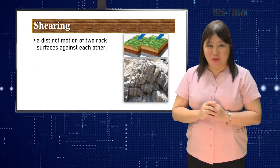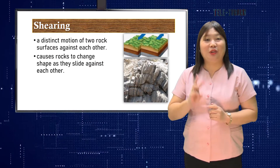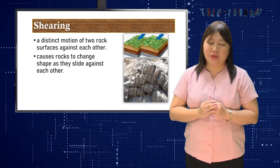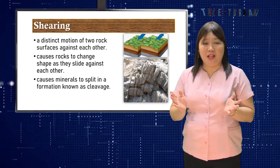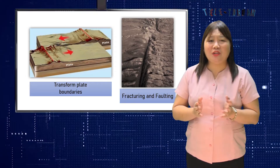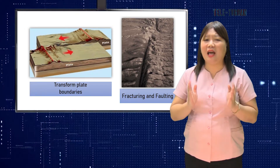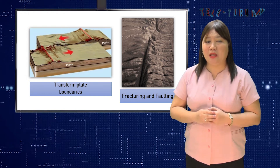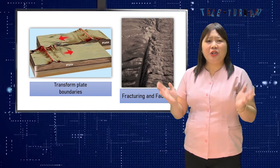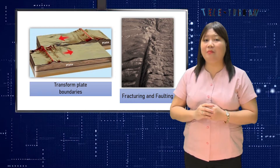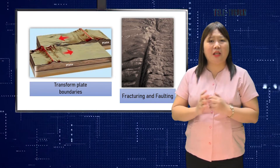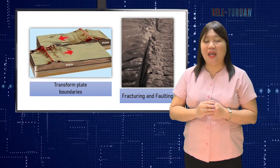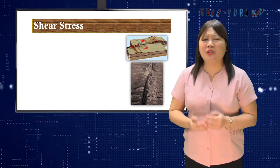Finally, shearing describes a distinct motion of two rock surfaces sliding against each other. This third type of stress alters rocks by causing them to change shape as they slide against each other. Shearing causes minerals to split in a formation known as cleavage. Under other circumstances, the rocks develop a pattern of parallel lines called foliation. Shear stress occurs along the edges of tectonic plates and most commonly takes place between 10 and 20 kilometers beneath the Earth's surface. If the same process occurred at the surface, it would result in fracturing and faulting; deep within the Earth the pressure is very great.